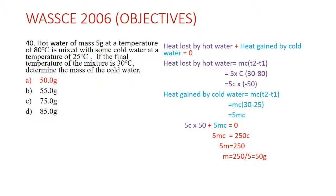So for the hot water: 5 × c × (−50). The specific heat capacity c was not given, so we maintain it. Then for the cold water, we use the same formula. The mass of the cold water is what we are finding (m), and the temperature change for the cold water is 30 − 25 = 5. Multiplying gives 5mc for the cold water side.